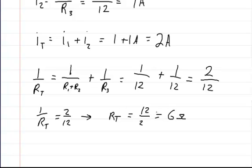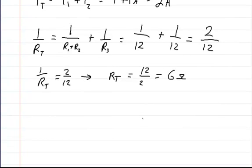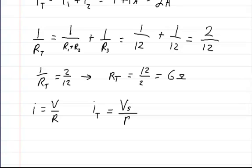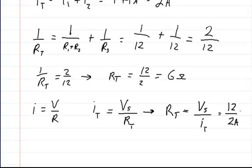You could also use Ohm's law, which states that current equals voltage divided by resistance. We already know the total current IT and the total voltage, which is the supply voltage. So we can manipulate the formula: total resistance equals total voltage divided by total current. The total voltage was 12 volts and the total current was 2 amps, so the total resistance equals 6 ohms. You get the same answer both ways.